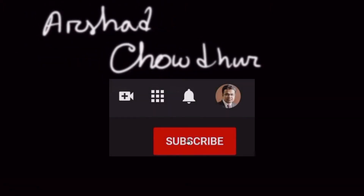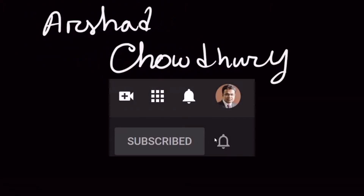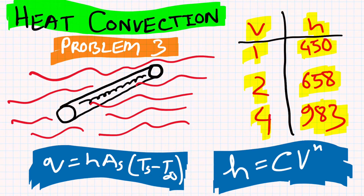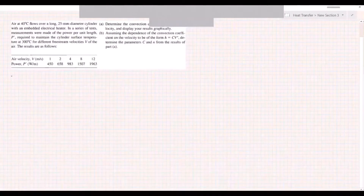Today we are going to see a heat convection problem where we are given some experimental data, and from that we are going to try to establish a relationship between convection heat transfer coefficient and velocity. So without further ado, let's look at the problem.